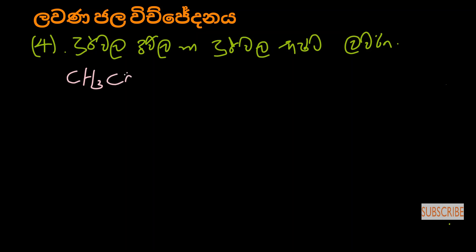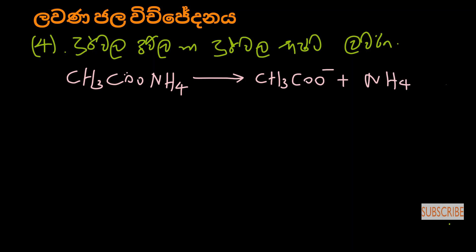Ammonium acetate — this is a special case. I need NH4+ and acetate ion. Ammonium acetate comes from ammonia and acetic acid. In this case, we need to look at whether the solution is acidic, basic, or neutral by comparing Ka and Kb values.